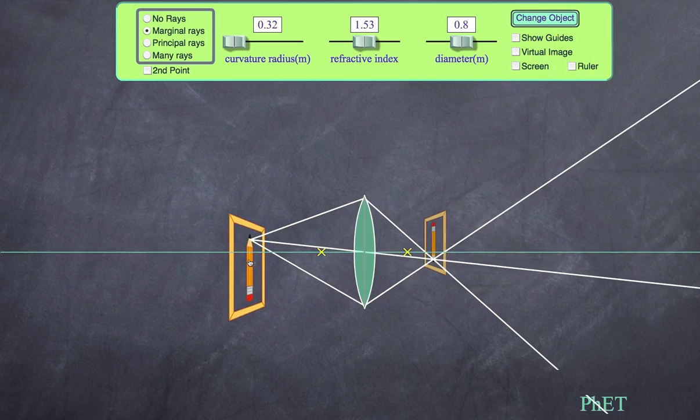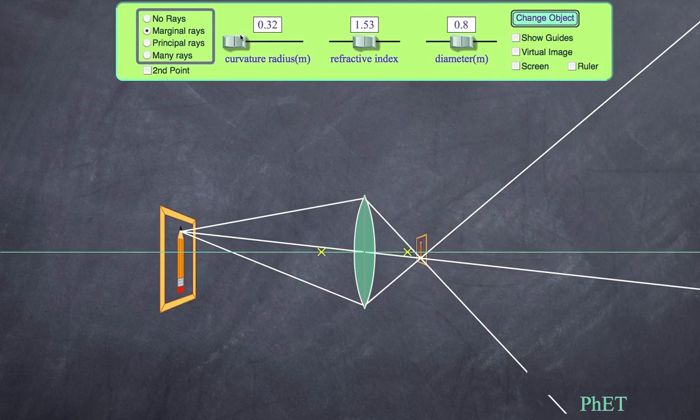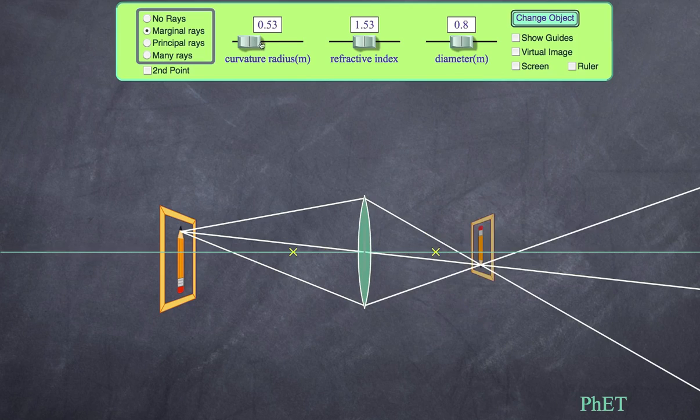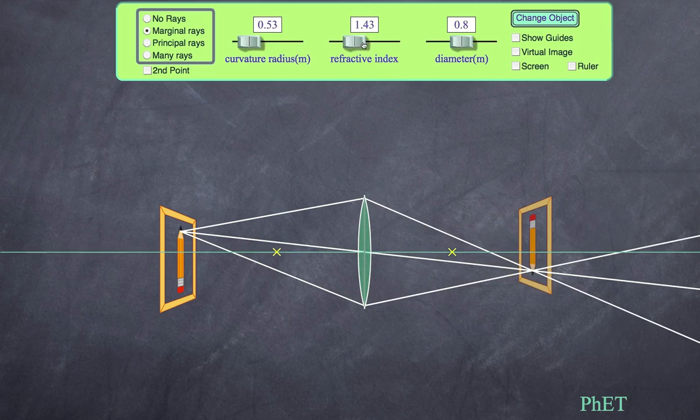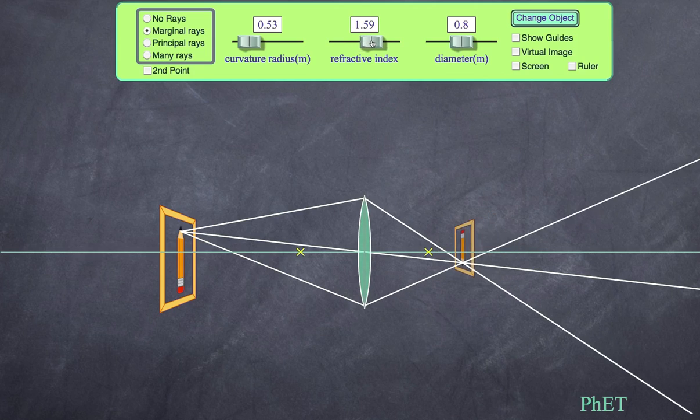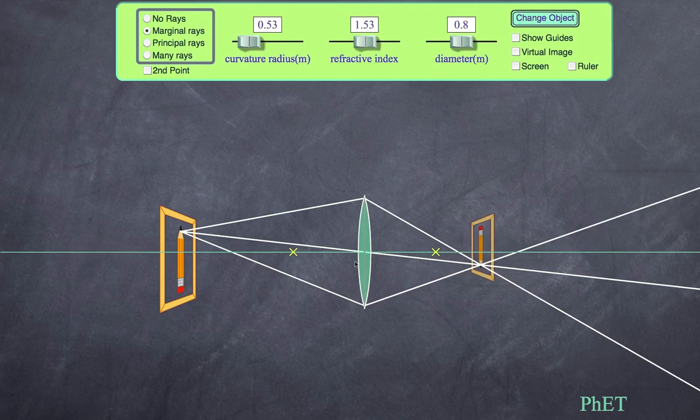That's the curvature. Clearly if I were to change the refractive index, the light is going to bend more, so that will also affect the position of the focal points and how much this bends. If I have a lens made out of glass versus jelly or quartz, I'm going to get different amounts of bending. Finally we can look at the diameter.